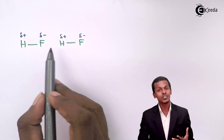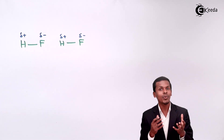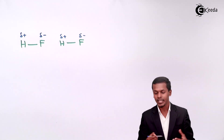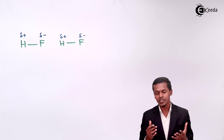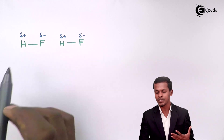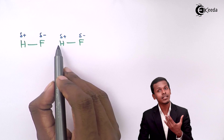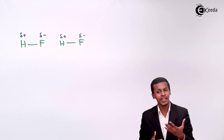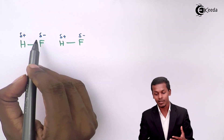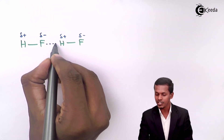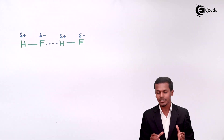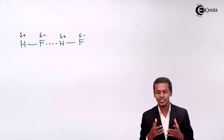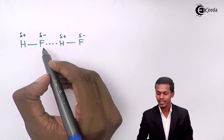Suppose HF is surrounded by another HF molecule. Again, fluorine will have a partially negative charge while hydrogen will have a partially positive charge. When these two molecules are close to each other, they will orient themselves so that the negative part of fluorine tries to attract towards the positive hydrogen of the other molecule, because opposite charges attract. This force of attraction exists between the hydrogen atom of one molecule and the fluorine atom of the other molecule, and this is known as hydrogen bonding.